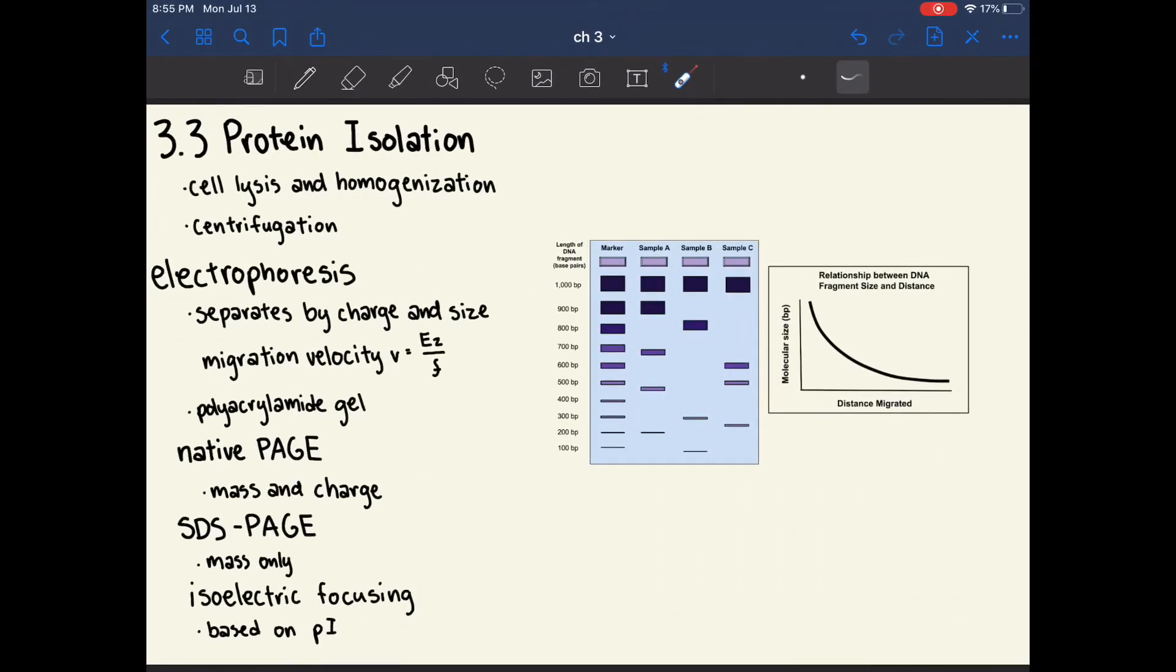Chapter 3.3 is about protein isolation. In order to isolate a particular protein to study, first the cell must be lysed, or the membrane must be broken open, and the contents have to be homogenized, which means that they have to be crushed, ground, or blended into an evenly mixed solution.